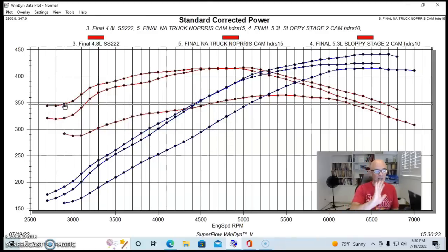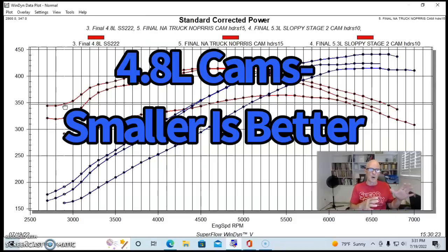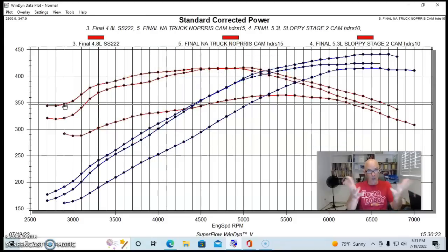The trade-off is above 5000 RPM, the smaller, milder Truck Norris cam obviously did lose power compared to the bigger Sloppy Stage 2 on the 5.3. I think on a 4.8 a milder cam would be an even better choice than the Sloppy Stage 2.